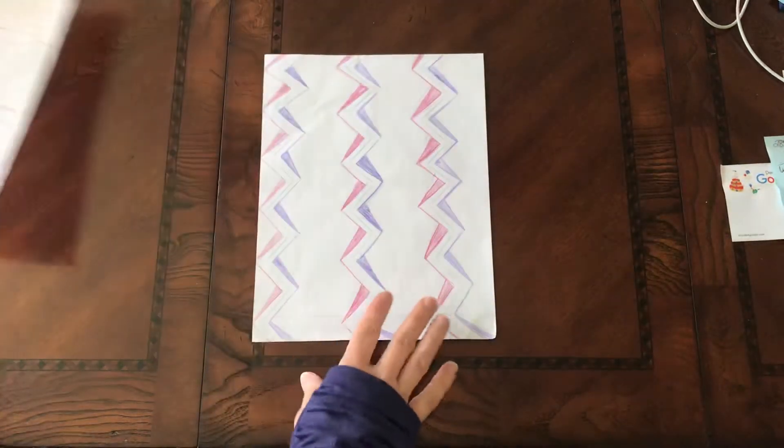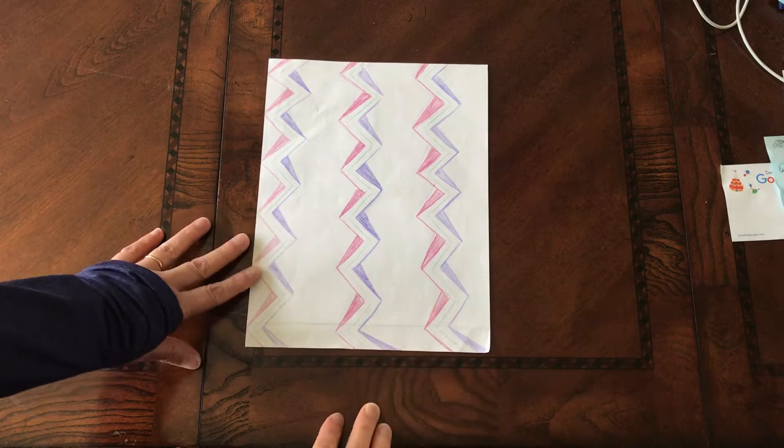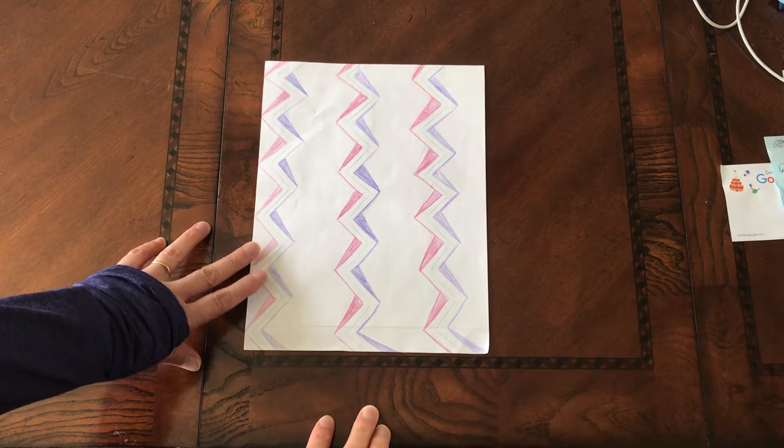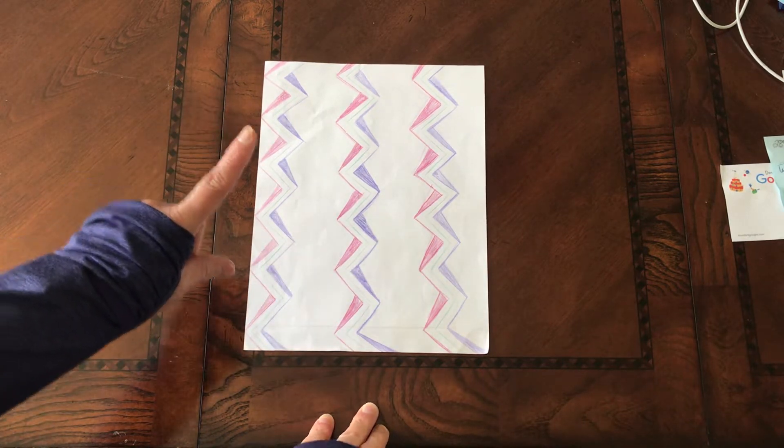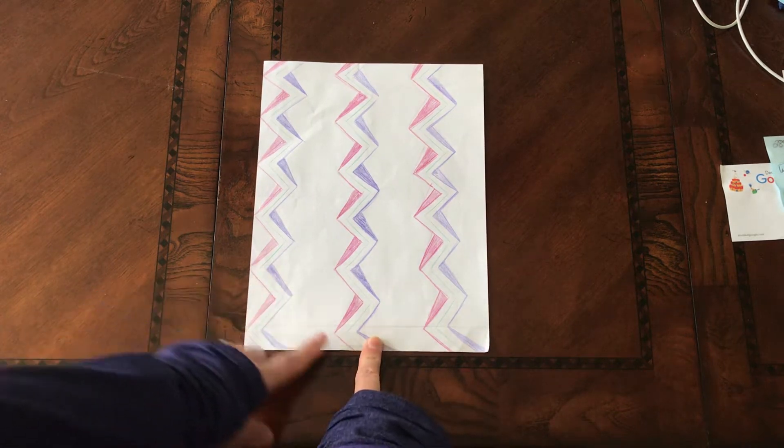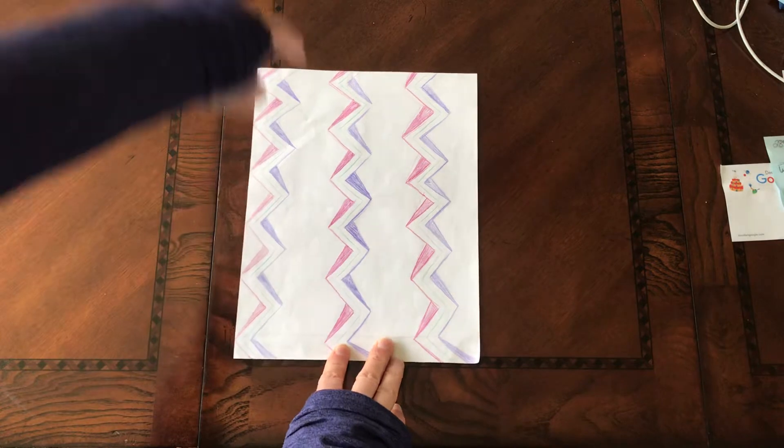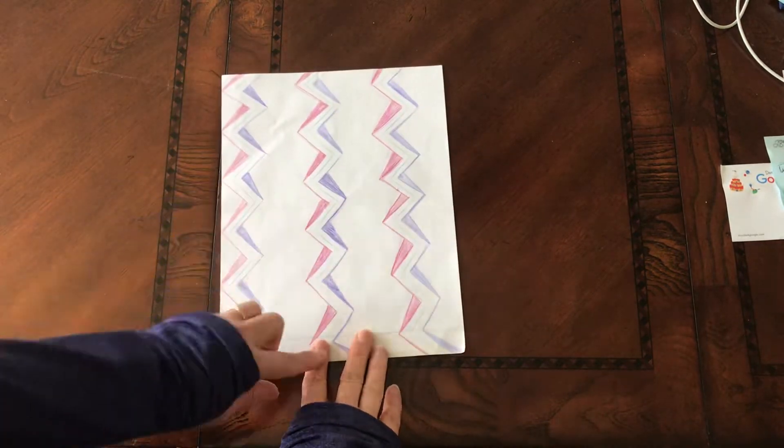We're going to put that aside, we don't need that right now. We are going to fold the paper, but before we start folding, don't start folding yet. Watch. We want to make sure that our paper is sitting on the table vertically, not horizontally, but vertically.